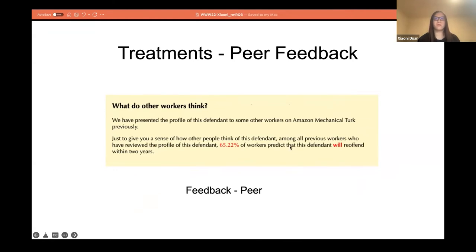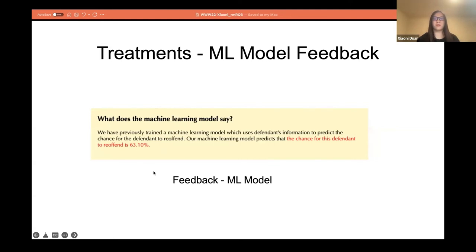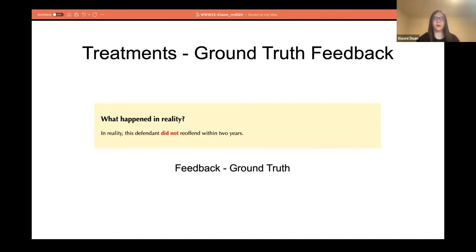We also have three task designs that provide different types of feedback. The first is the feedback treatment, where after the participant makes their final risk estimation, we show them feedback on previous workers' judgments on the same defendant. Another is the machine learning model feedback — we trained a fair machine learning model, and after the participant makes their initial risk estimation, we show them the model's prediction. The last treatment is the ground truth feedback treatment, where after the participant makes their risk estimation, we present them with the ground truth answer, after which they are redirected to the next task.